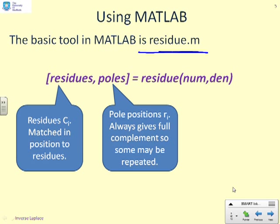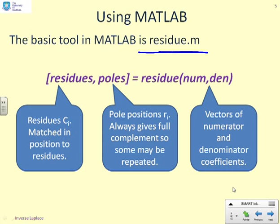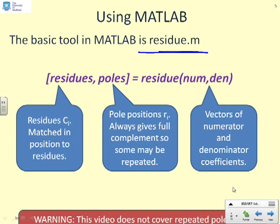Residues. The residue ci will be given in a vector, and the positions will be matched to the positions of the corresponding poles in the poles vector. So the first residue in residues will go with the first pole in poles, and the second with the second and so on. And finally, what inputs do you give? You need to give two vectors. I've called them num and den for brevity, but the first argument is a vector of the coefficients of the numerator, and the second argument is a vector of the coefficients of the denominator.